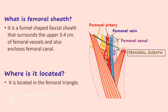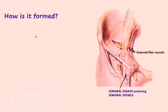Where exactly is it located? It is located in the femoral triangle. As for how it is formed — it is made up of deep fascia. Here we can see the inguinal ligament, which is going to separate the pelvis from the thigh.